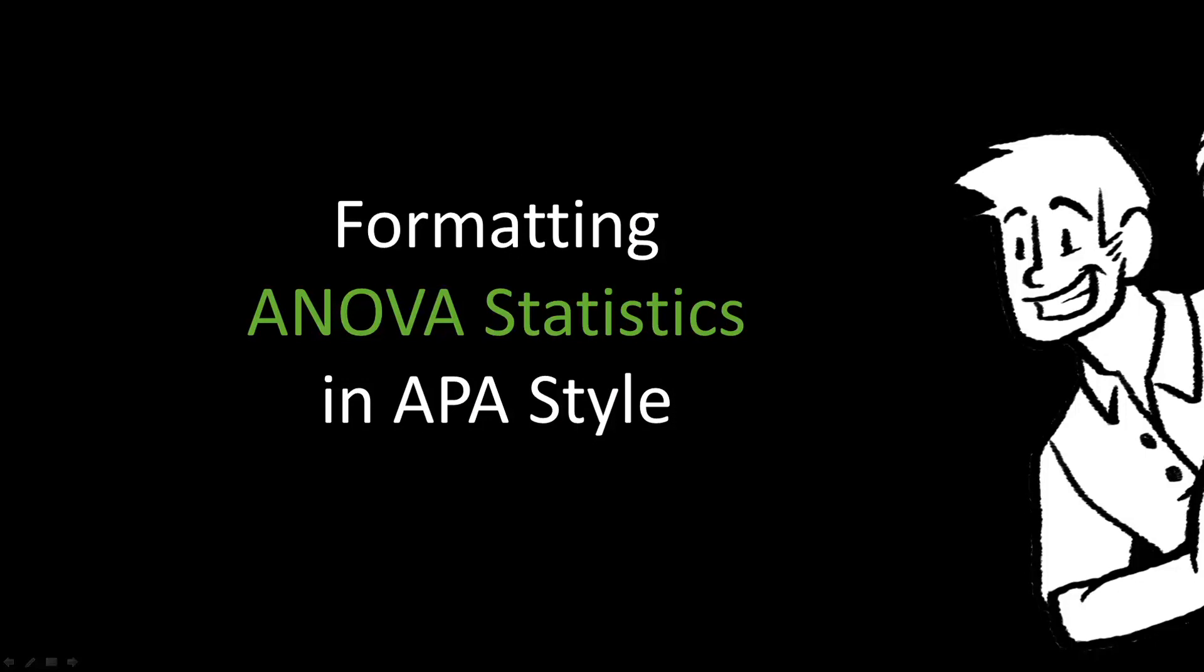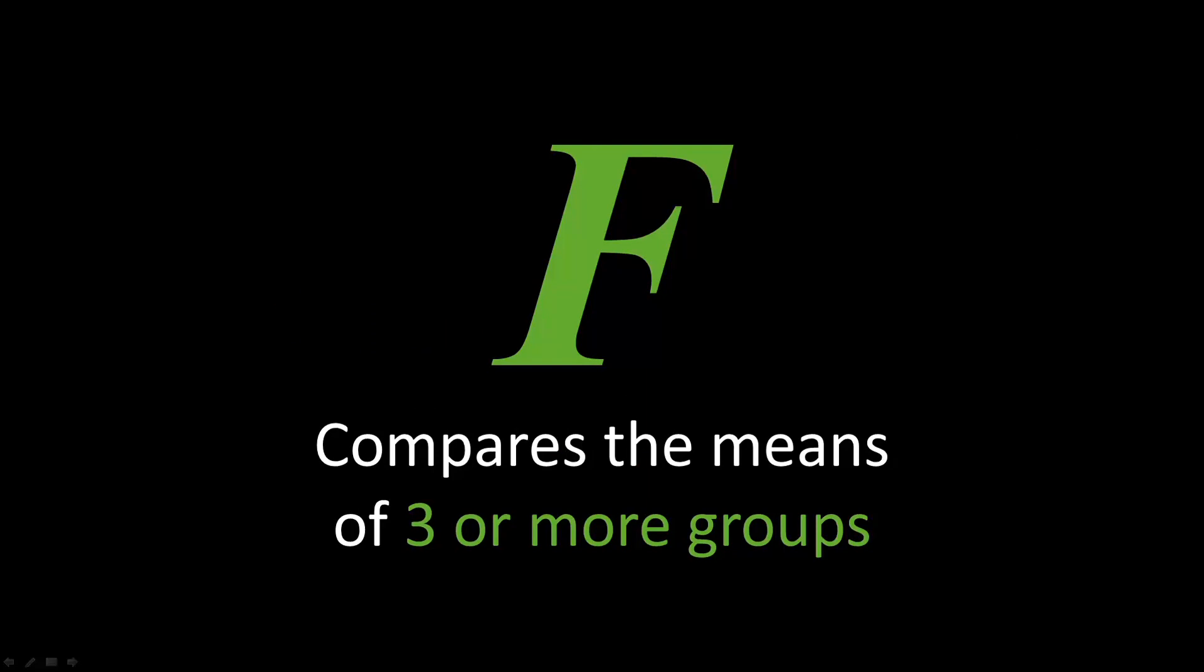In this supplement to the APA Survival Guide, we'll learn how to format ANOVA statistics. ANOVA stands for Analysis of Variance. The statistical symbol for ANOVA is a capital letter F. ANOVA compares the means or averages of three or more groups.